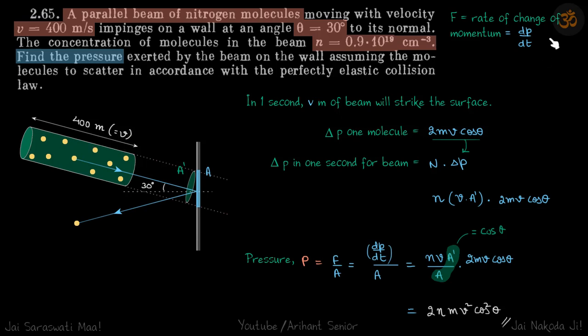Again, we need to find the force, which is dP by dt. So we need to find change in momentum in one second. Whatever number of particles in a beam of length V, which is 400 meters, all these particles are going to strike the wall in one second. So whatever is the change in momentum of these particles, that is the force. In one second, V meters of beam will strike the surface.